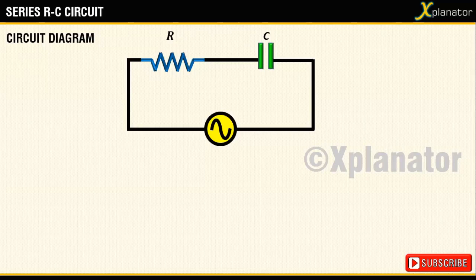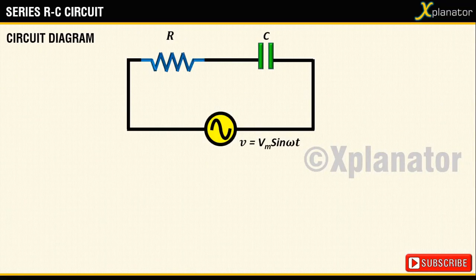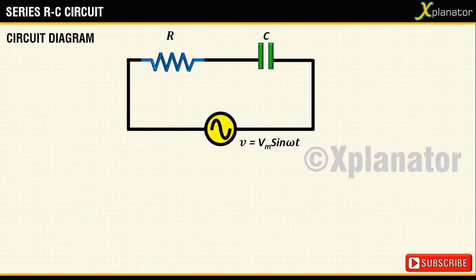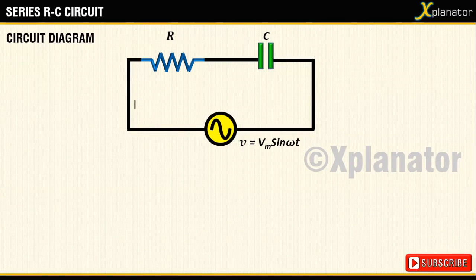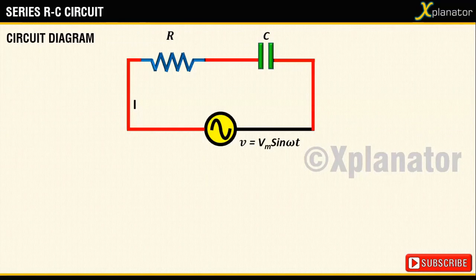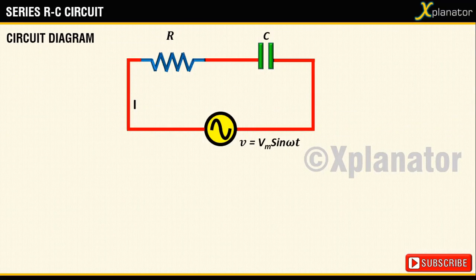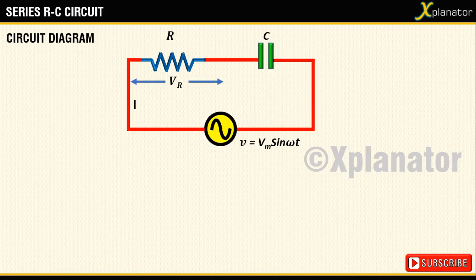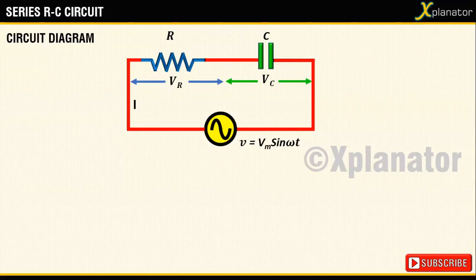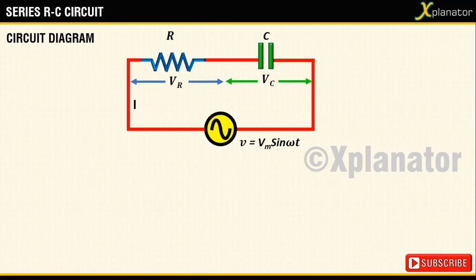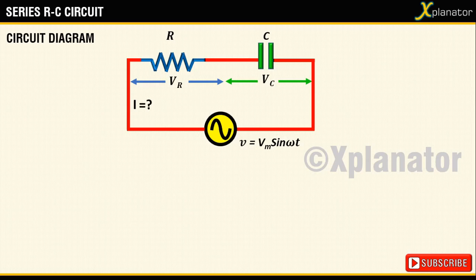The alternating voltage applied is given by the equation V equals Vm sin ωt. Let the current flowing in the closed circuit be of magnitude I. This current, when it flows through the resistor, it drops a voltage Vr and it drops a voltage Vc when it flows through the capacitor. We have to find an equation for this current flowing in the circuit.